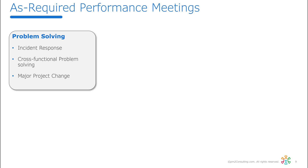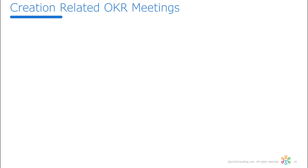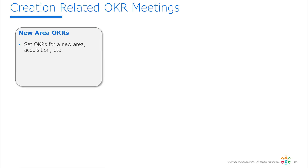We also have creation-related OKR meetings. These have a different meeting template, which we'll discuss later. Creation meetings fall into three categories. The first is setting up OKRs for a new area — one that hasn't had OKRs before, such as a new region, new product, new department, or an acquisition.